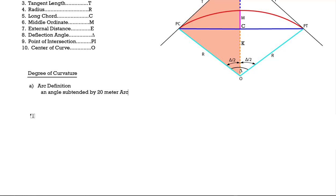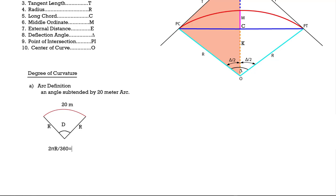The arc definition is the degree of curvature D, defined as the central angle for a 20-meter arc. Using proportions: 2πR divided by 360 equals 20 divided by D. Therefore D equals 360 times 20 divided by 2πR, which simplifies to D = 1145.916 divided by R.